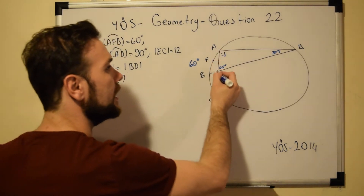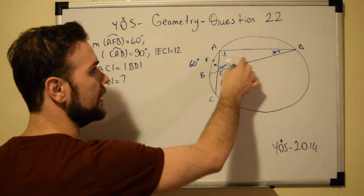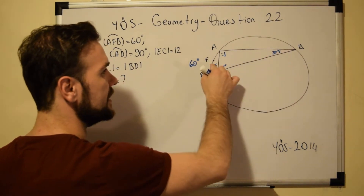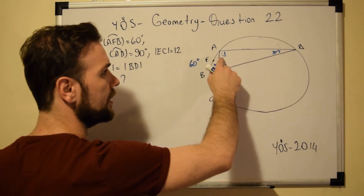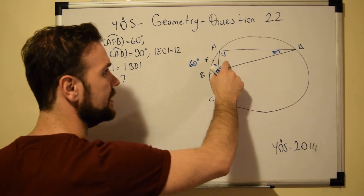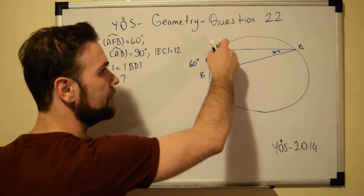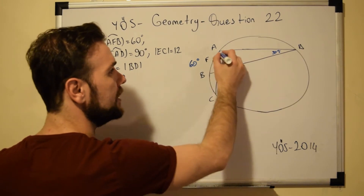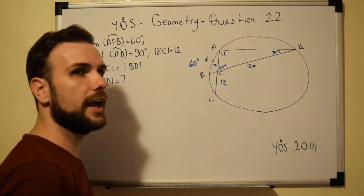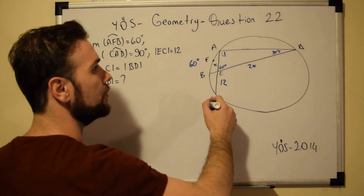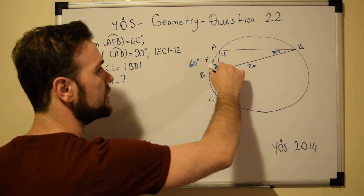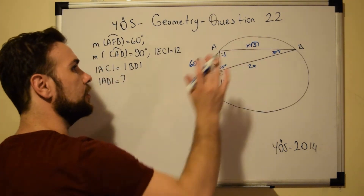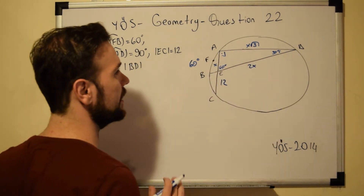I'm going to name AE as X. Since the side in front of the 30 degree angle is X, and we are dealing with a special 30-60-90 triangle, the side in front of the 90 degree angle will be double — so 2X. And the side in front of the 60 degree angle will be X√3. These are the rules we apply immediately.